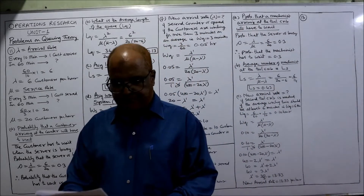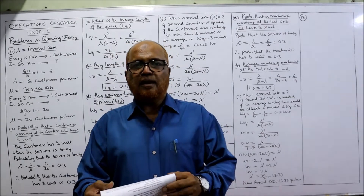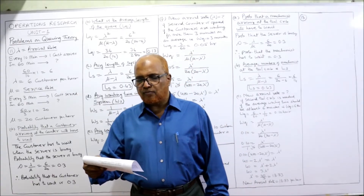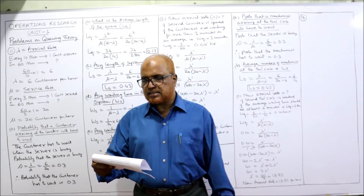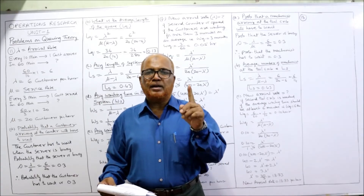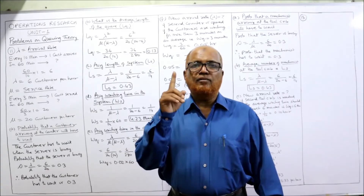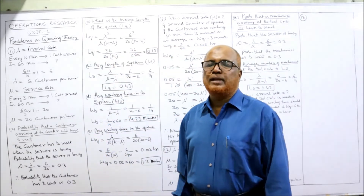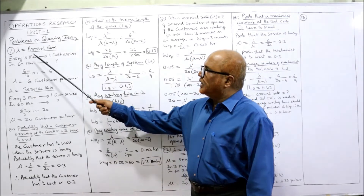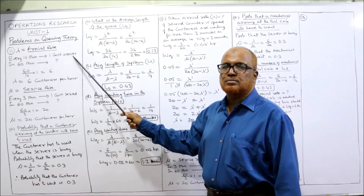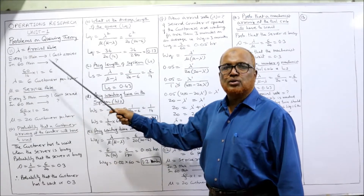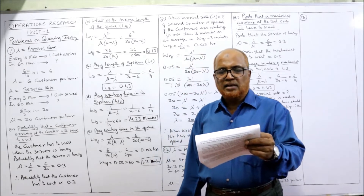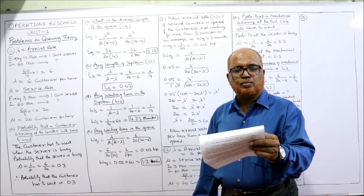Now see problem number 11. The rate of arrival of customers at a counter follows a Poisson distribution with an average time of 10 minutes between one customer and the next. So every 10 minutes one customer arrives. In one hour (60 minutes), how many customers arrive? We need lambda: for every 10 minutes one customer arrives, so in 60 minutes that is 60 divided by 10, giving 6 customers per hour as the arrival rate lambda.